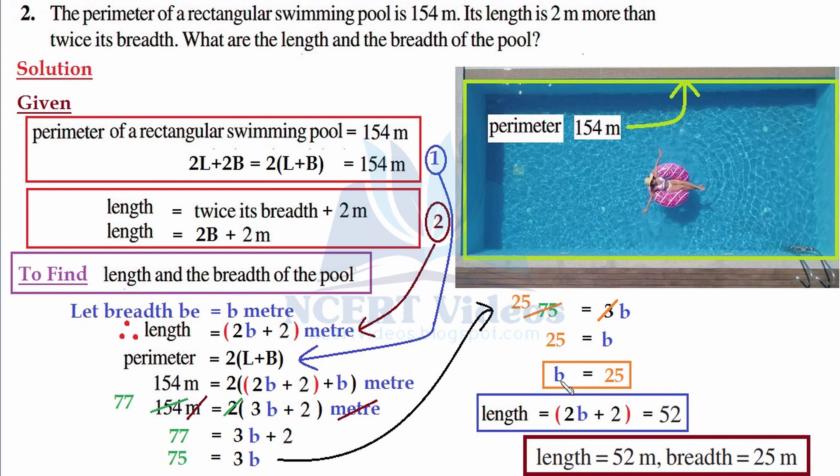So what was b? We assumed for it, it was breadth. And what the question asks for: what are the length and breadth? So we have found breadth is 25. Now what is length?